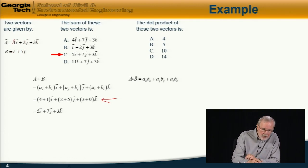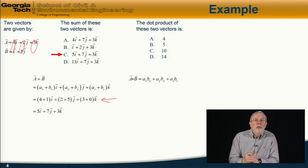So in this case, this is going to be 4 times 1 plus 2 times 5 plus 3 times 0. Which is this equation right here. And computing that, that is equal to 14. So the answer is d.